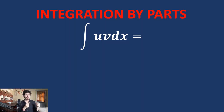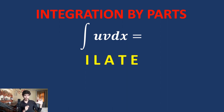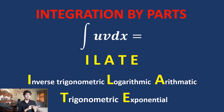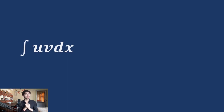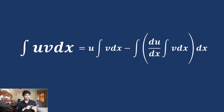Now let's learn another important formula: integration by parts, used for integrating the product of two functions. It is similar to the product rule in differentiation but a bit more involved. With two functions u and v, we first determine the first and second function using the ILATE rule, where I = inverse trigonometric, L = logarithmic, A = arithmetic, T = trigonometric, and E = exponential. The formula is: ∫u·v dx = u·(∫v dx) − ∫(u' · ∫v dx) dx, meaning: first function times integration of second, minus integration of (derivative of first times integration of second).